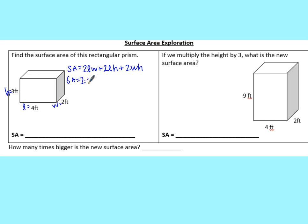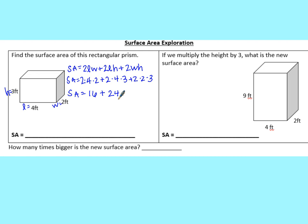We substitute the values: 2(4)(2) + 2(4)(3) + 2(2)(3). Multiplication comes before addition, so 2 × 4 × 2 = 16, plus 2 × 4 × 3 = 24, plus 2 × 2 × 3 = 12. Adding those faces together gives us 52. So the surface area of this shape is 52 feet squared.